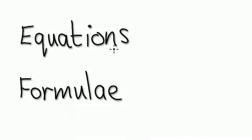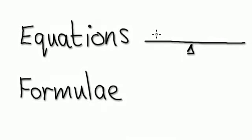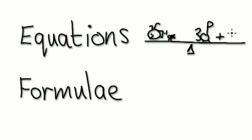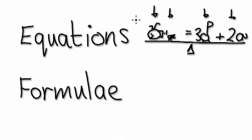Not many people know the difference between equations and formulae. An equation is when you have a balance — you have something like a blue whale plus a little chicken equals three giraffes plus two elephants. You can put all sorts of different things on one side and lots of different things on the other side, as long as the two sides balance.